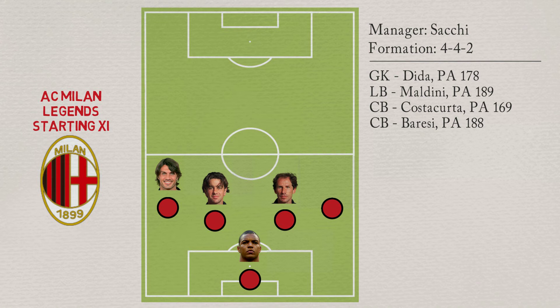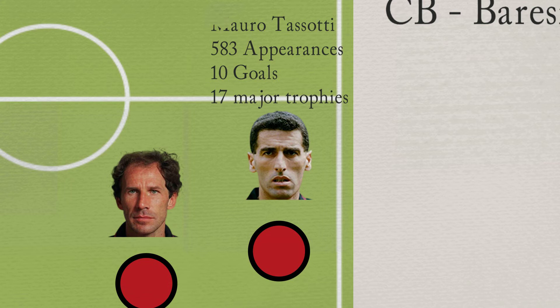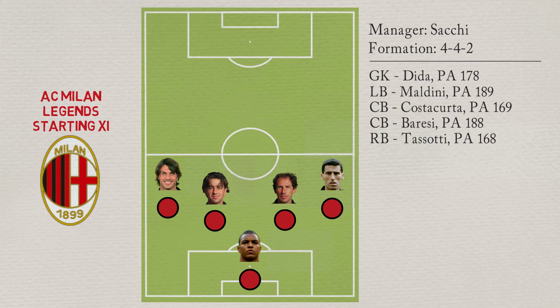As right-back, Mauro Tassotti. The Italian made 583 appearances and scored 10 goals with Milan, winning 17 major trophies. Tassotti has a potential ability of 168.